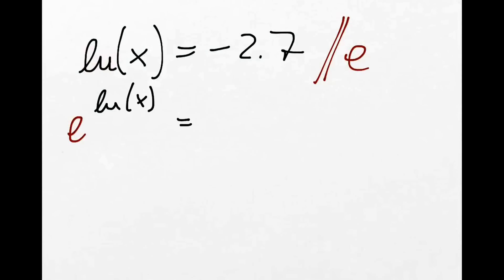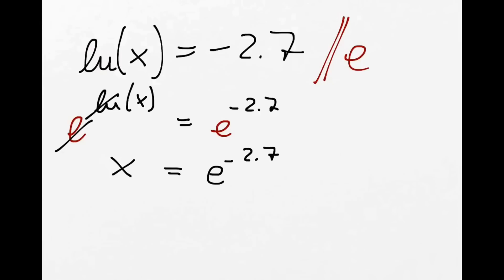Let's look at ln x equals minus 2.7. Again we know what we need to do — we need to eliminate the ln, and for that we take both sides e. So we have e to the power of ln(x) equals e to the power of minus 2.7. Putting that in the calculator gives us 6.72.